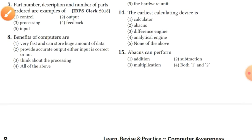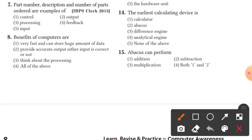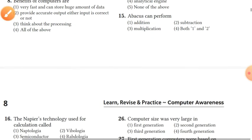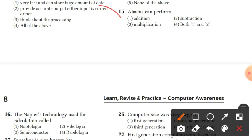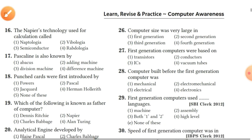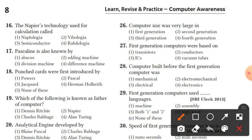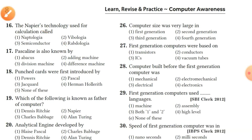Question 14: the earliest calculating device is Abacus. Option 2, Abacus, is the right answer. The next question's answer is also related — Napier's bones, with option 4 being the right answer.